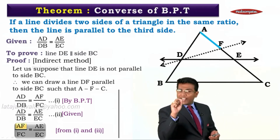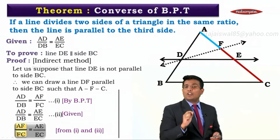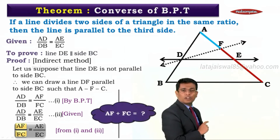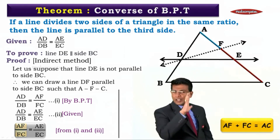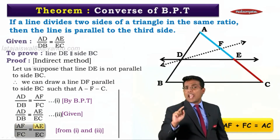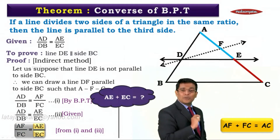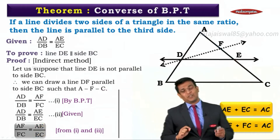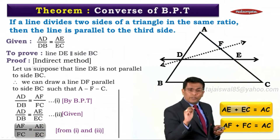I'll give you a hint. Observe AF in the numerator of the first ratio and look at it in the figure. AF and FC together gives us AF + FC, which is equal to AC. Now look at the right-hand side ratio: AE and EC together gives you AC as well. These are the two important results to remember.